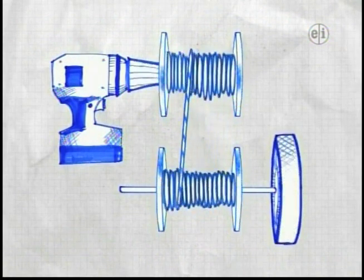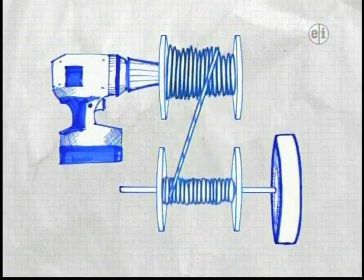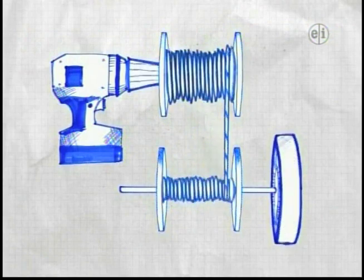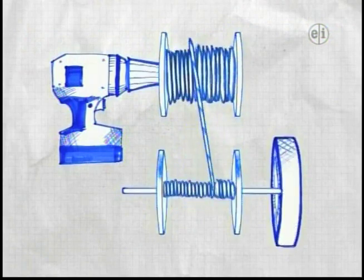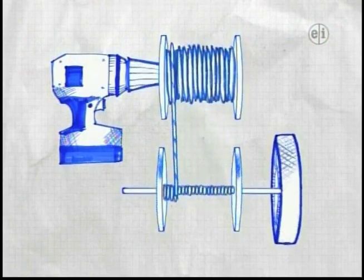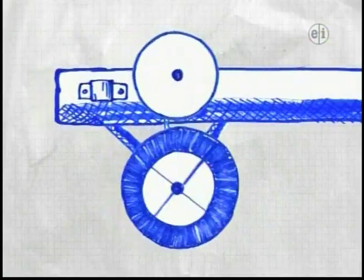That spins the wheel, and the wagon accelerates. A CVT design may have a speed advantage over a direct drive design, because the CVT can spin the wheels faster than a direct drive.